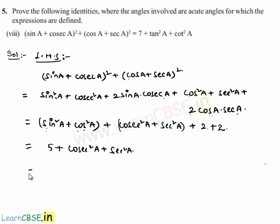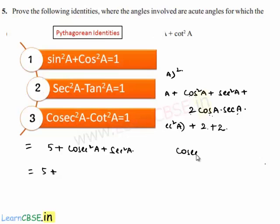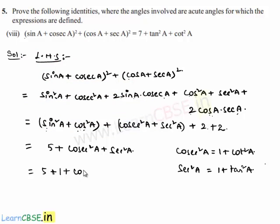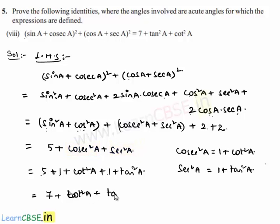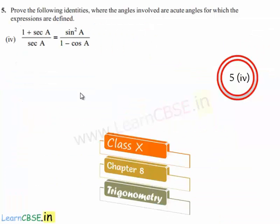Which equals 5 plus, using the identities cosecant squared a equals 1 plus cot squared a and secant squared a equals 1 plus tan squared a, we substitute to get 5 plus 1 plus cot squared a plus 1 plus tan squared a, which equals 5 plus 1 plus 1 plus tan squared a plus cot squared a, that is 7 plus tan squared a plus cot squared a, which is our right hand side. Hence LHS equals RHS and we have proved the identity.